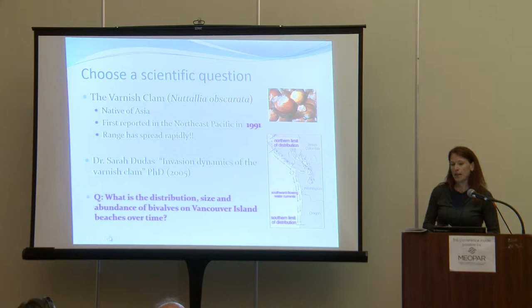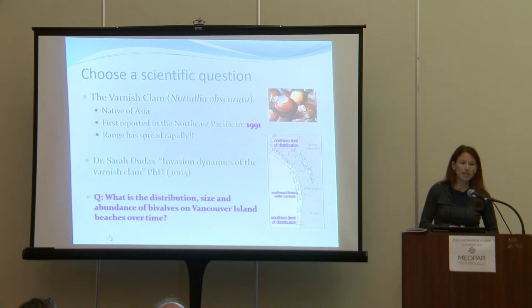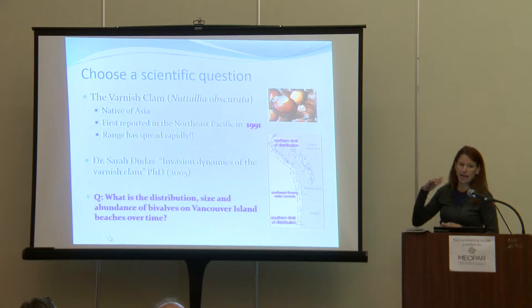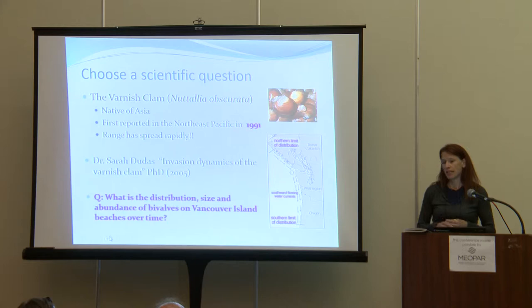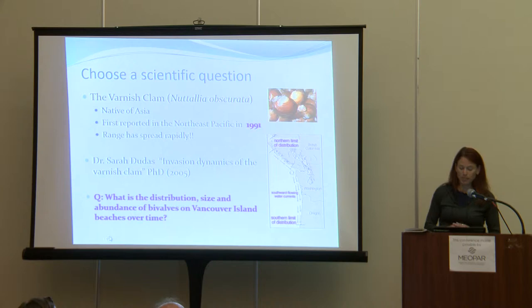Dr. Sarah Dudas did her PhD thesis on the invasion dynamics of the varnished clam, published in 2005. Although her thesis didn't identify immediate concerns about it out-competing native species, she highlighted the need to continue long-term monitoring because it was having impacts in unexpected areas. It inhabits the high intertidal zone, where raccoons were seen foraging on it — suggesting a link between terrestrial and aquatic environments — and oyster catchers feeding on it appeared to be increasing in population. Our main question became: what is the distribution, size, and abundance of bivalves on Vancouver Island beaches over time, beginning at Nanaimo?